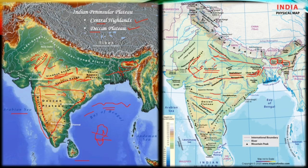The Deccan Plateau extends in the south up to the Nilgiri and Cardamom Hills. On the western and eastern edges of the Deccan Plateau are the Western Ghats and Eastern Ghats respectively. The Western Ghats run parallel to the west coast, and as you can see, the Western Ghats form a continuous range that can only be crossed through passes — known as 'darre'.